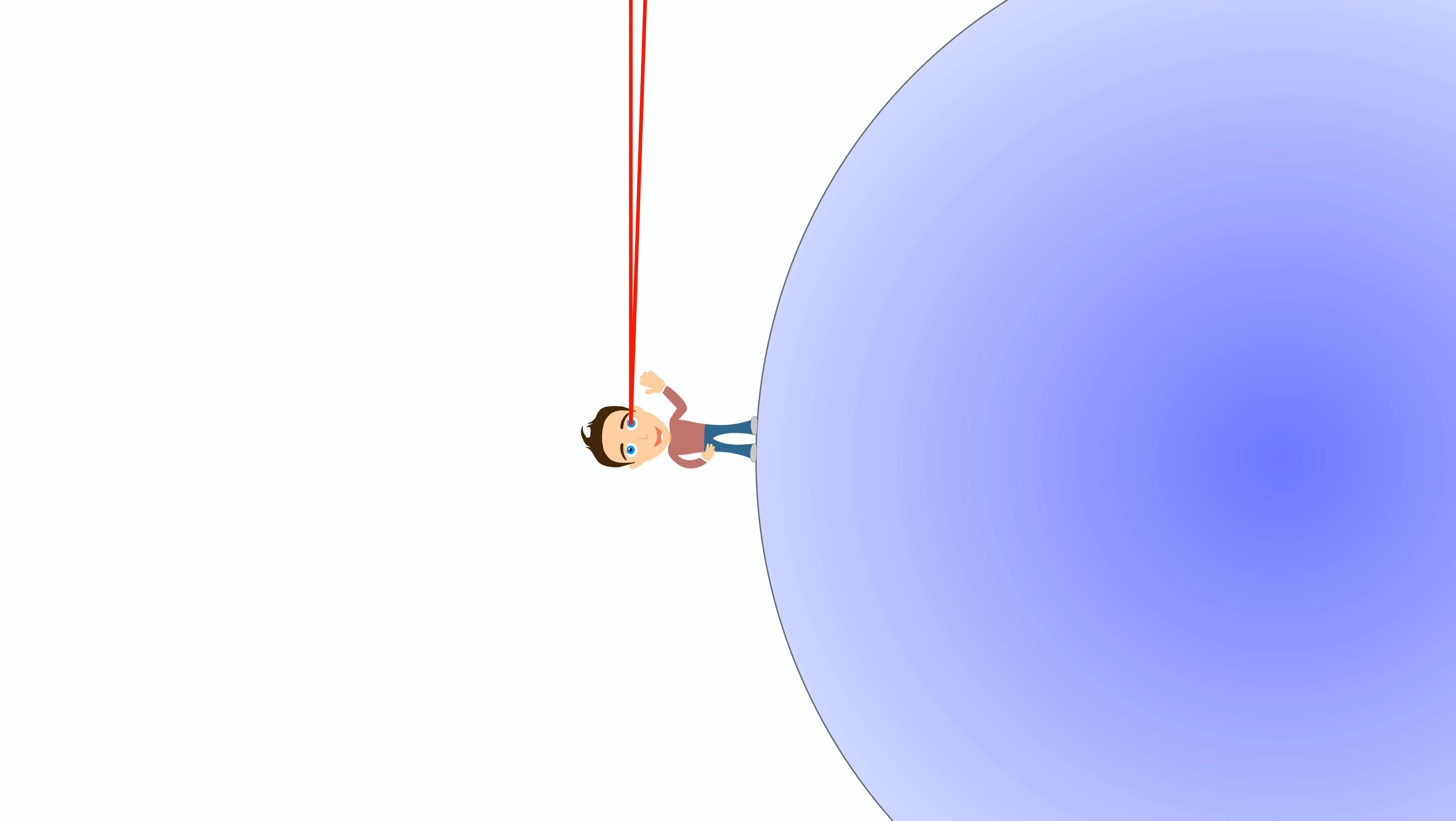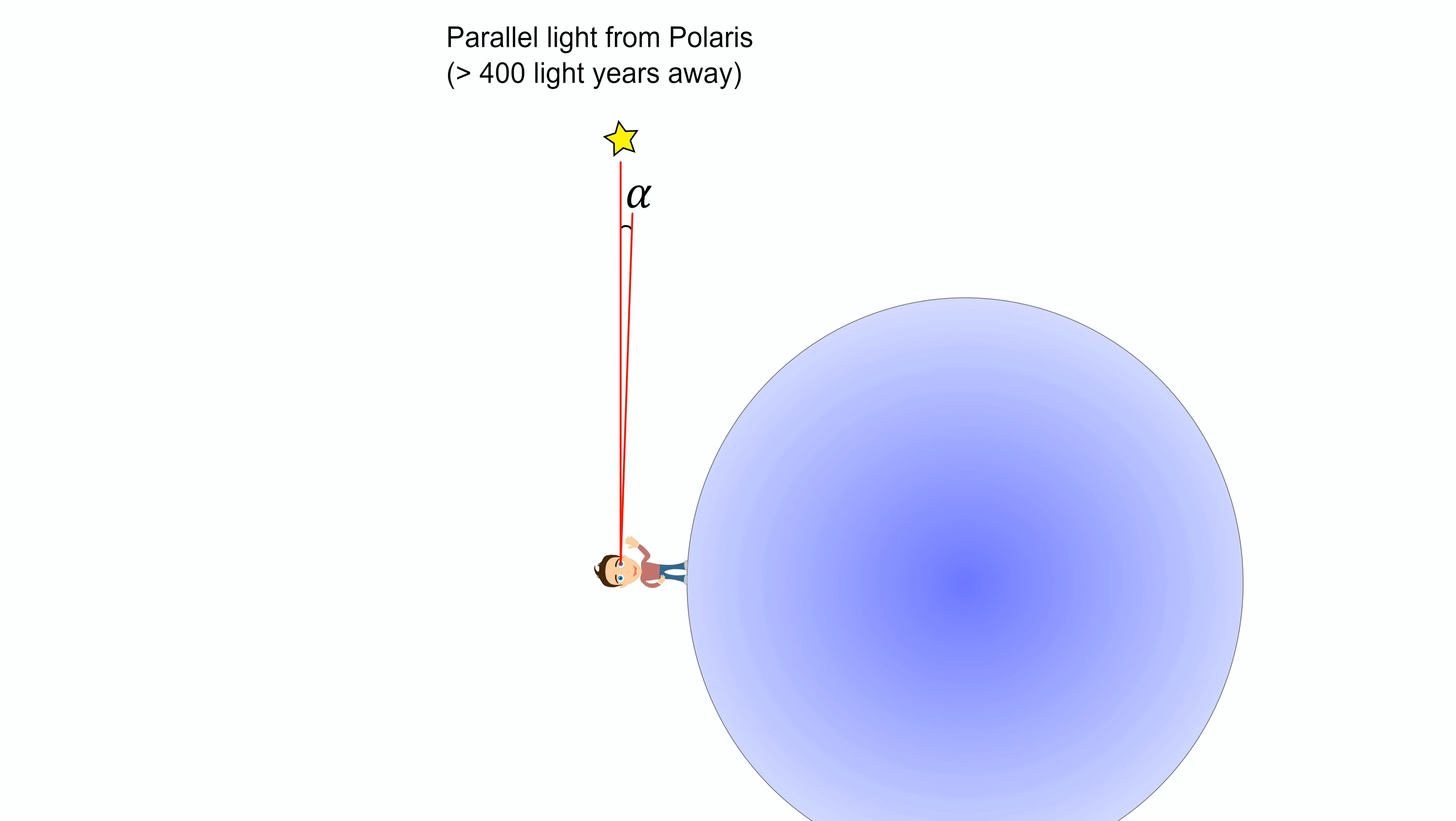If the Earth is not flat, but a ball, that would greatly change the angles we measure, as the surface we stand on curves. So this is a good experiment to determine the shape of the Earth.